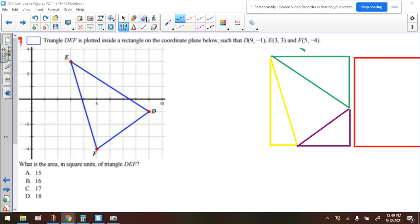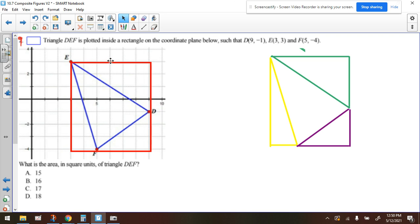So what's the strategy that we're going to use? We're going to put it inside a rectangle. So let me show you what that would look like. Notice that each vertex touches a side of the rectangle, and you would have to draw that rectangle around it if you were doing this on paper and pencil.